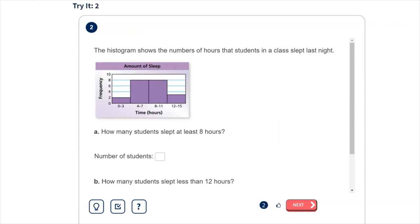Let's go ahead and use this histogram here to answer a few questions. So we can see in the histogram, it's measuring the amount of sleep. And on the bottom here, we've got the time in hours, and then the frequency, again, measuring how many people slept that amount of time.